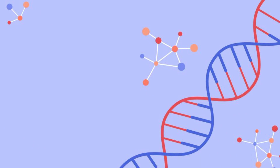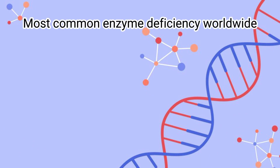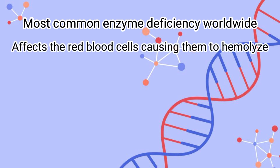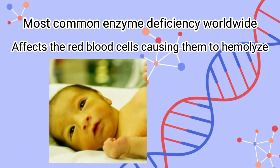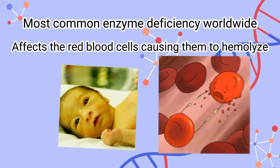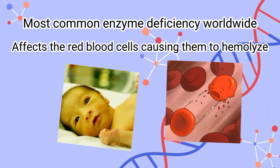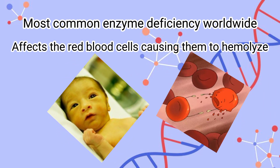G6PD is said to be the most common enzyme deficiency worldwide. It affects the red blood cells, which increases their vulnerability to oxidative stress, and can result in neonatal hyperbilirubinemia, acute hemolysis, chronic hemolysis, or the absence of clinical symptoms.